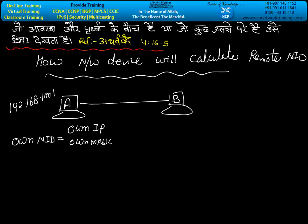Whether we are applying the mask or not, the machine will take it automatically and convert the own IP address and own mask into binary format and apply a logical AND gate. The output of the AND gate will be the own NID. The own NID is 192.168.100.0 because the number belongs to class C.